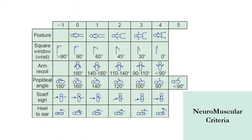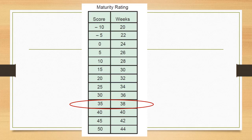For neuromuscular criteria, we assess posture and perform manoeuvres: the square window at the wrist joint, arm recoil at the elbow joint, popliteal angle at the knee joint, scarf sign, and heel to ear. Again, higher scores indicate greater maturity. The physical and neuromuscular scores are added together and correlated with gestational age — for example, a score of 15 corresponds to approximately 30 weeks, and a score of 45 corresponds to 42 weeks.